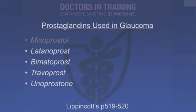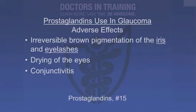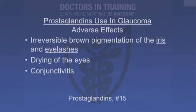Next, we're going to move on briefly to prostaglandin drugs used in glaucoma. Remember how prostaglandin actions in the eye decrease intraocular pressure — sounds great for glaucoma. Latanoprost, bimatoprost, travoprost, and unoprostone are the drops we use for glaucoma. These are long-acting prostaglandin F2 alpha derivatives, administered by drop into the conjunctival sac once or twice daily. They act to decrease intraocular pressure. Side effects include irreversible brown pigmentation of the iris and eyelashes — you have to warn your patients. You can also get drying of the eyes and conjunctivitis, which can happen any time you're putting drops in the eye.